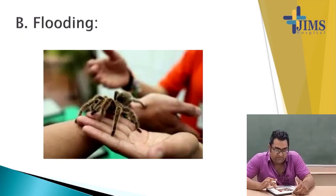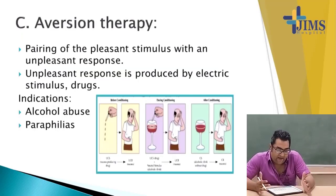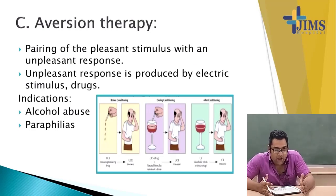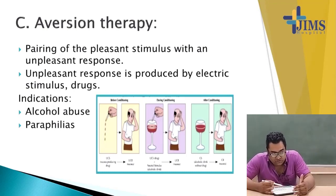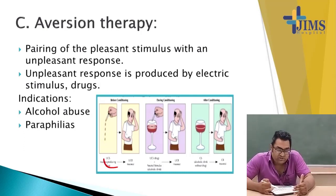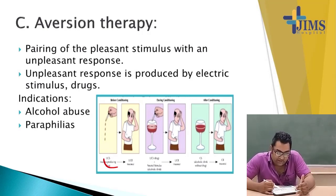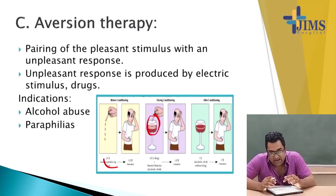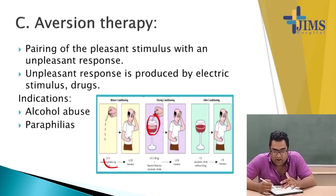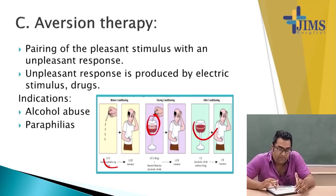Flooding involves direct flooding of the stimulus. Aversion therapy is the pairing of a pleasurable stimulus with an unpleasant response produced by electric stimulus or drugs. For example, in alcoholics, before conditioning we use UCS; during conditioning we add metronidazole or a drug with a bad taste to the alcohol, which will make the patient nauseated and vomit after consuming alcohol. This is how aversion therapy works.